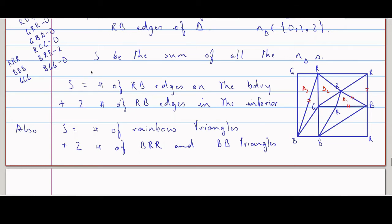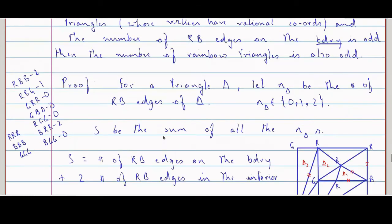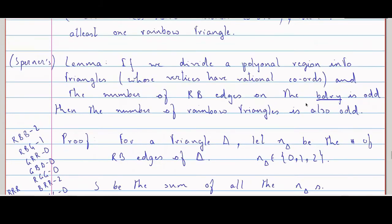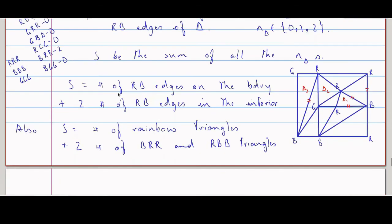Now, what is Sperner's Lemma saying? The number of RB edges on the boundary is odd. So if the number of RB edges on the boundary is odd, then S has to be odd — because it's even plus odd. But since this part is already even, the number of rainbow triangles has to be odd.